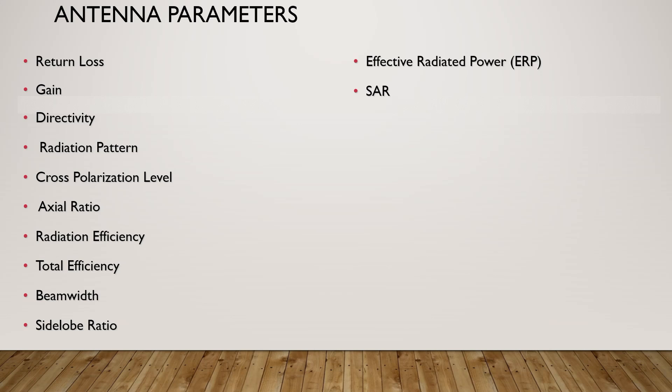Gain is the amount of power radiated in a specific direction relative to a power source that radiates equally in all directions. Directivity is a key parameter that describes how well an antenna focuses its radiated power in a particular direction. Directivity is a ratio of radiated intensity in a given direction for an antenna to radiated intensity averaged over all directions. It measures how directional an antenna's radiation pattern is compared to an isotropic radiator.